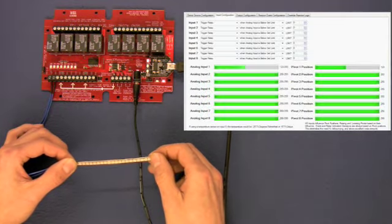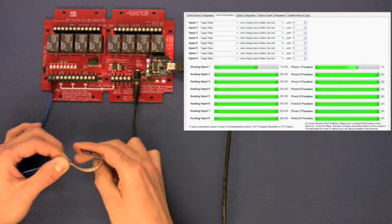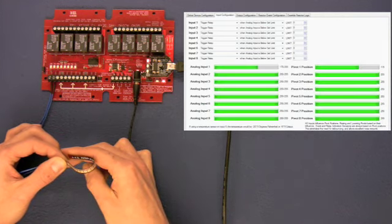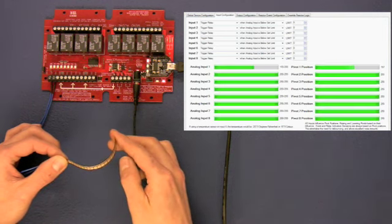Here we have the flex sensor set up with the configuration utility, and you can see the flex sensor actually changing analog to digital input 1 when it's flexed or released.